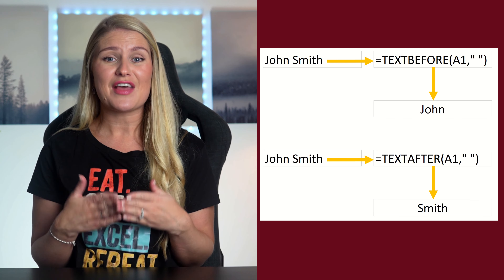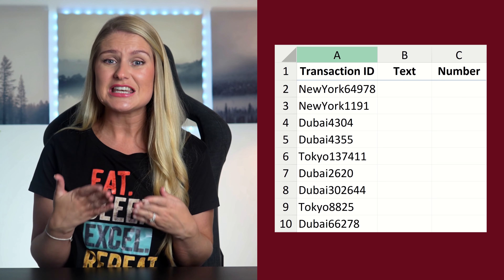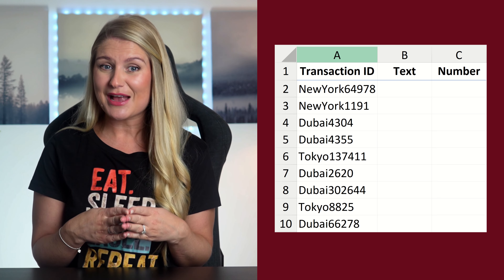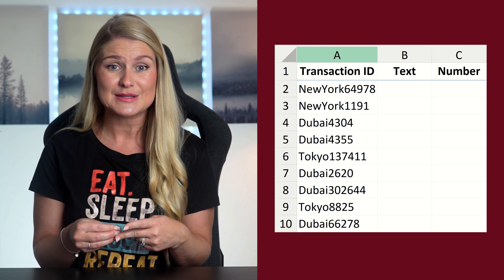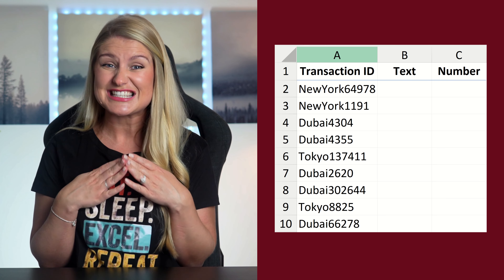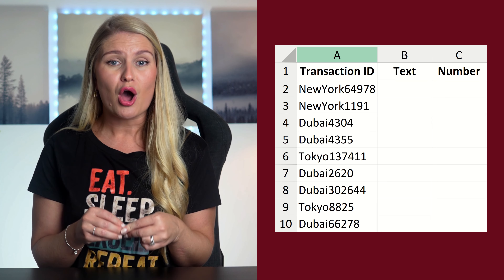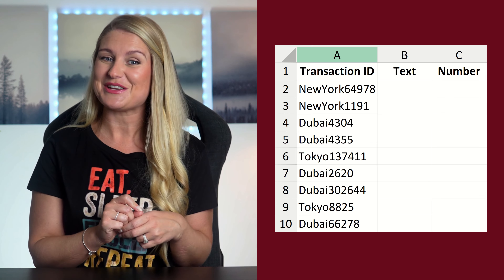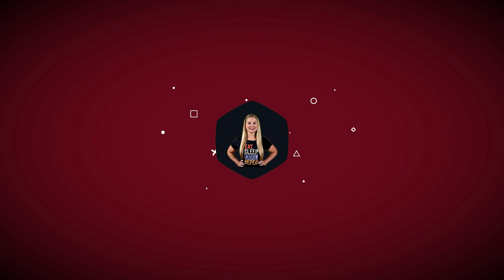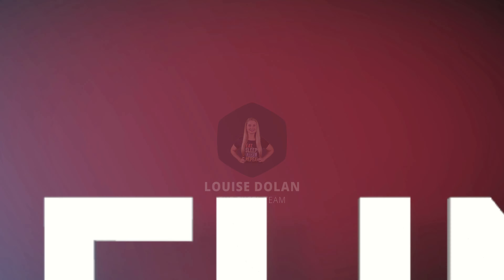The problem with all of these functions is they rely on an identifier which clearly represents the divisions of the text string. What do we do, however, when there are no identifiers like in our data set here? How can we divide this string into an individual text portion and an individual number portion, especially when the character count of text values and numerical values can be different across the entire data set? We can use our own custom built functions, and that's exactly what I'm going to show you today.